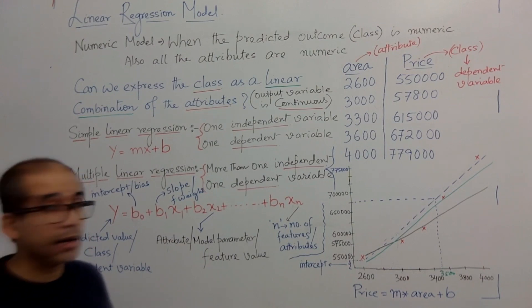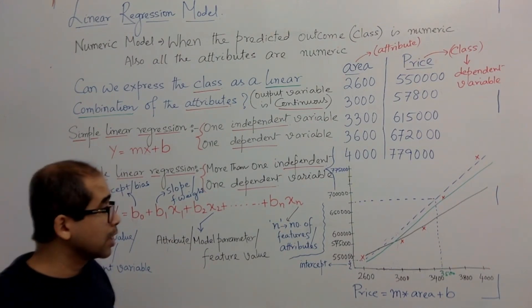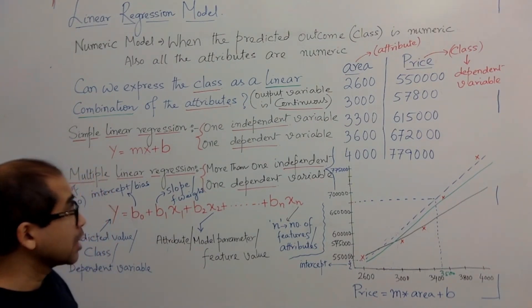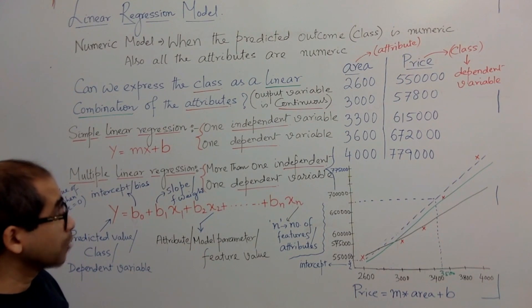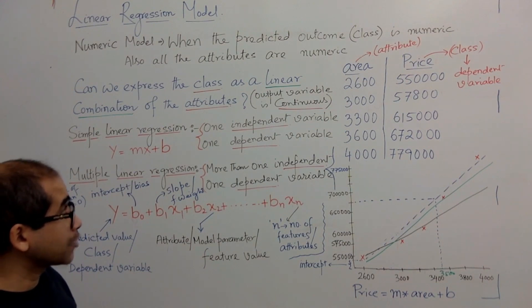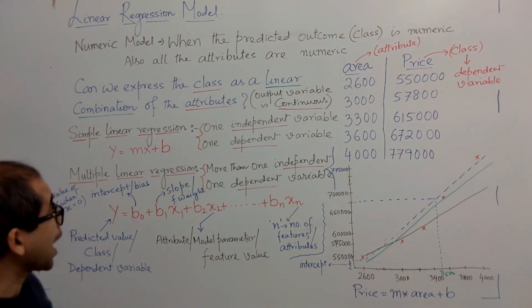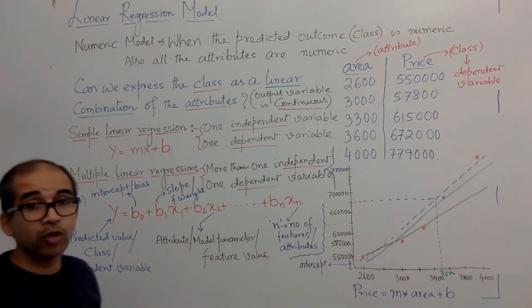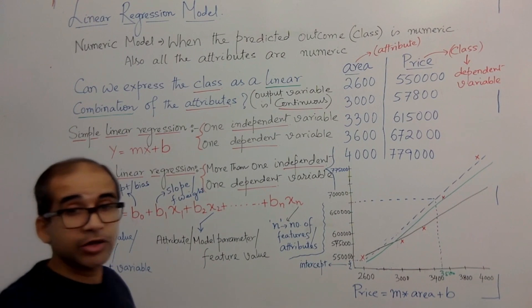For this blue line, if the feature area has the value zero, the price will still be the intercept — b or b0. Linear regression is a very important modeling technique for numeric attributes, and we will study more about linear regression.